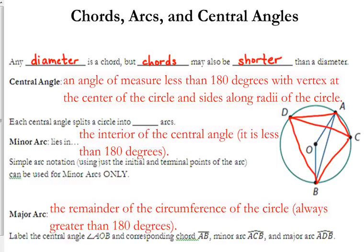An angle of measure less than 180 degrees with the vertex at the center of the circle. That's the key. The vertex of a central angle is at the center of the circle, and the sides of that angle would be radii.